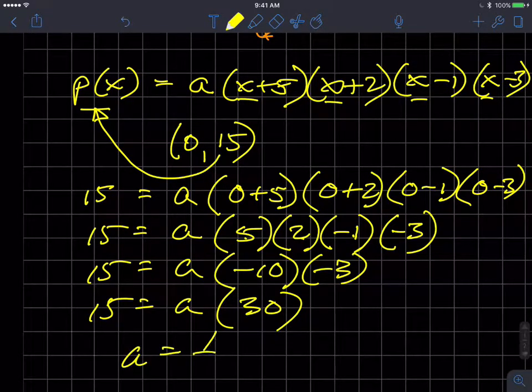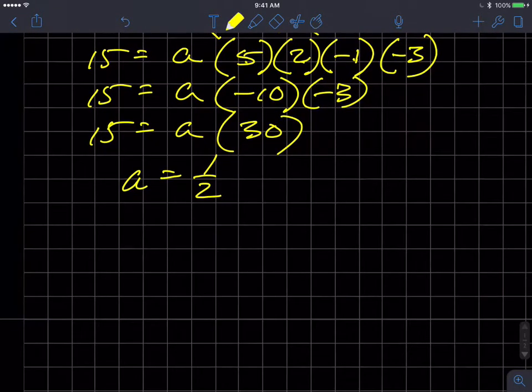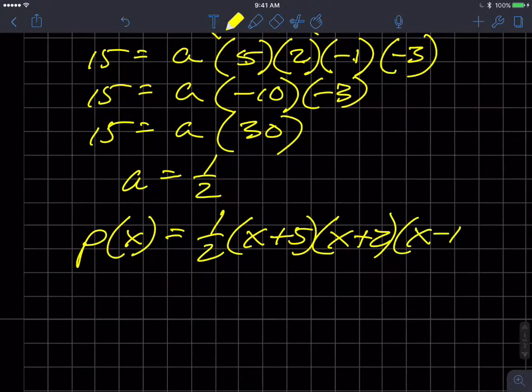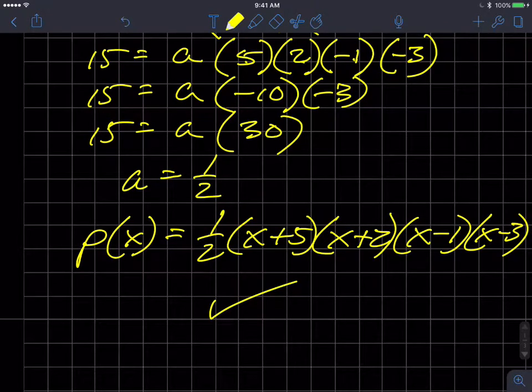So my function really is p of x equals 1 half, x plus 5, x plus 2, x minus 1, x minus 3. And that's it. Have a good one.